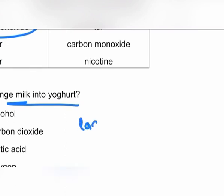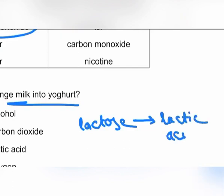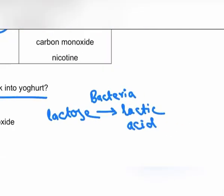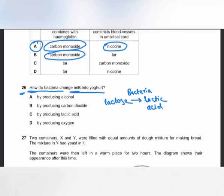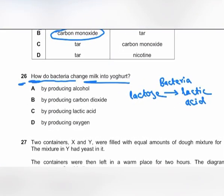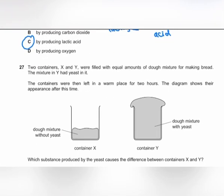MCQ number 26: how do bacteria change milk into yogurt? Bacteria convert lactose (the milk sugar) into lactic acid by anaerobic respiration. Lactic acid denatures the milk proteins, causing the milk to coagulate or curdle, forming yogurt. The answer is C.